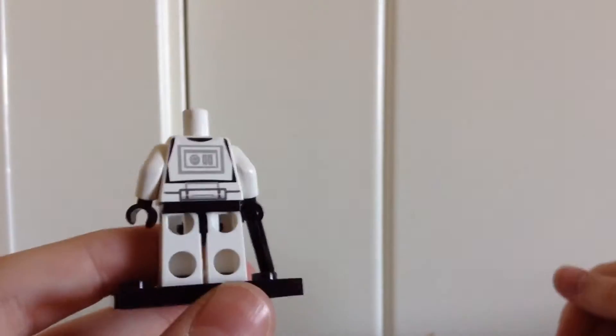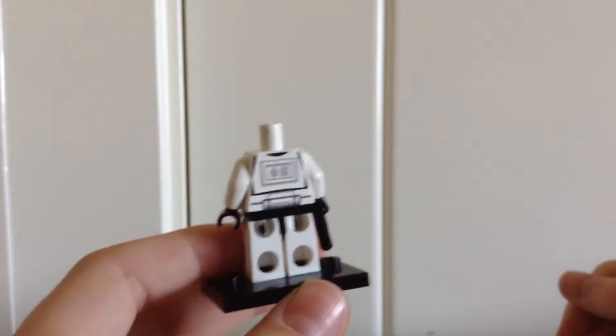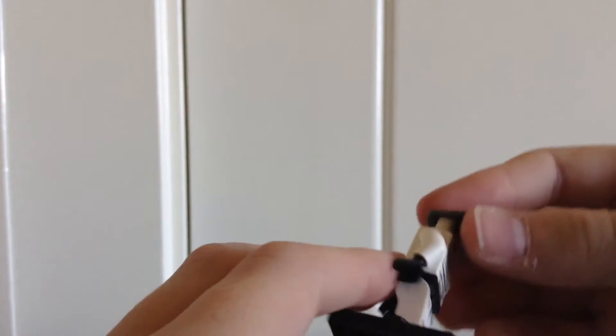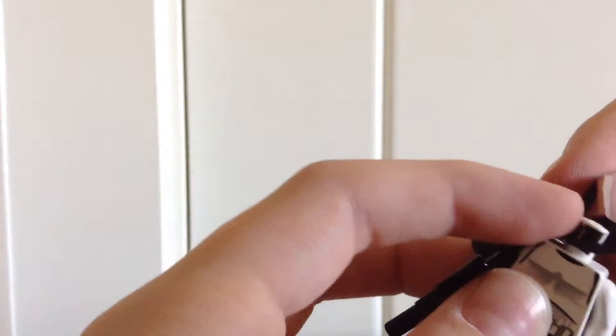Which we are now gonna take off to take a look at his printing on the back of his torso. There it is. Nothing too fancy. Let's go ahead and put the pauldron and the backpack piece back on. Won't take very long.